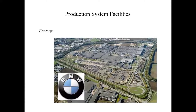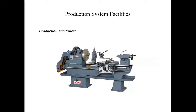In the case of production system facilities, first we have the factory, where the processing or the assembly operations are carried out onto the starting raw materials, various components, and parts. Then in production system facilities, we have the production machines and workstations, which are used to perform the processing operations or the assembly operations.